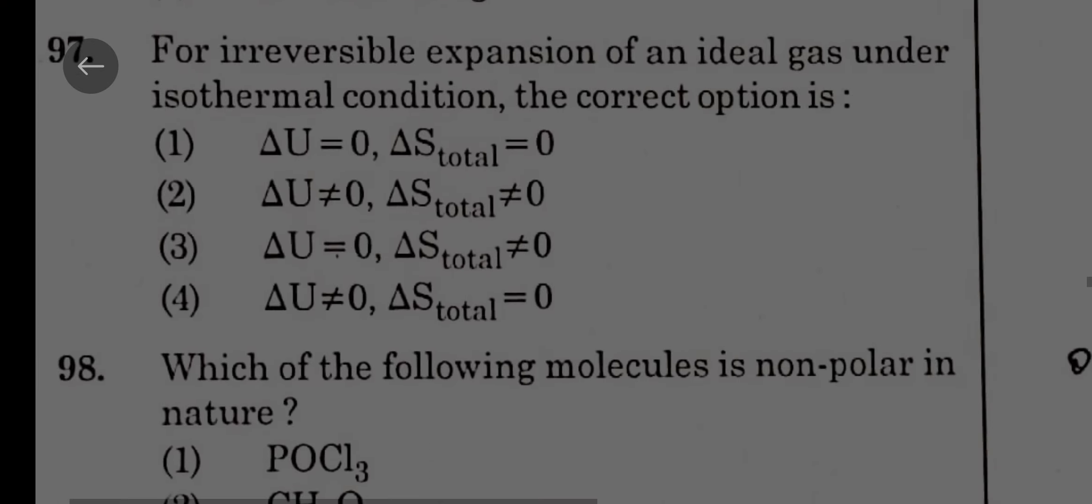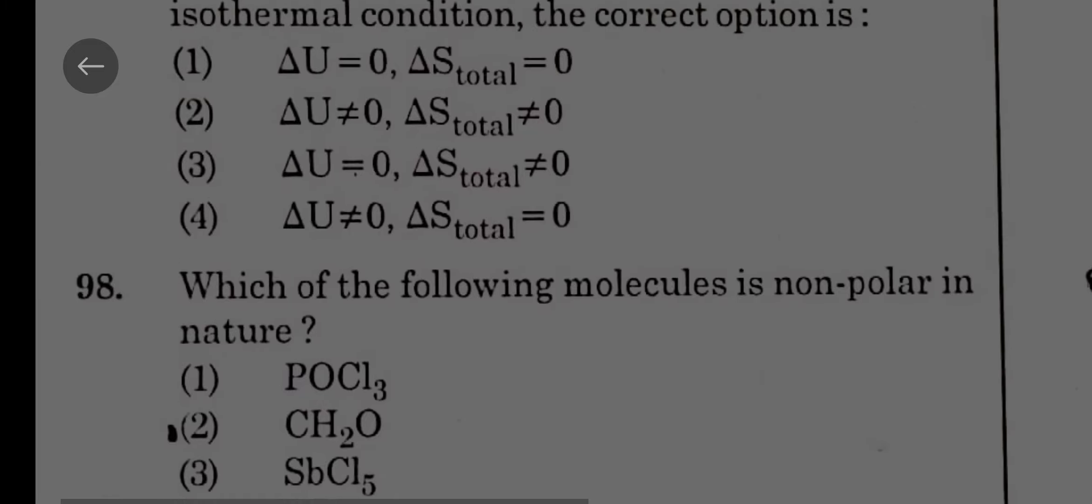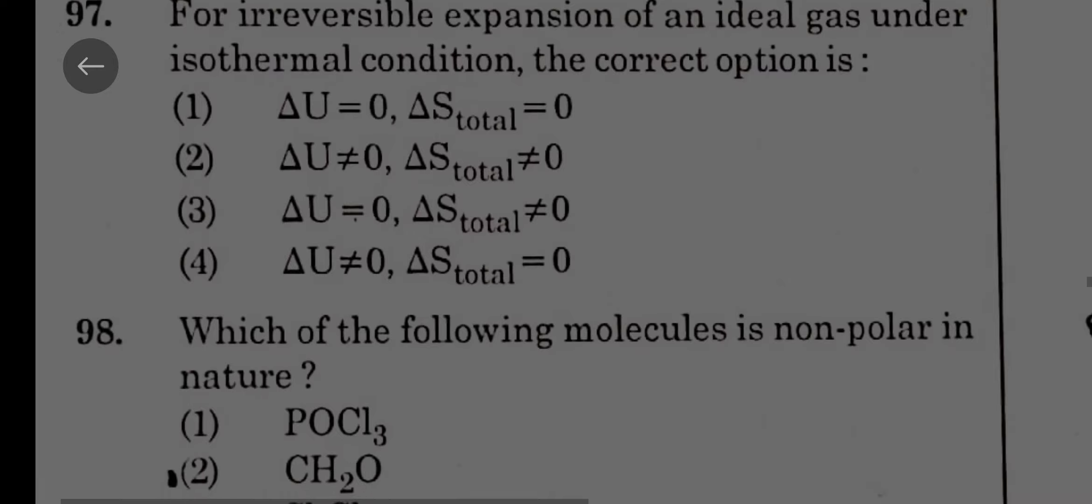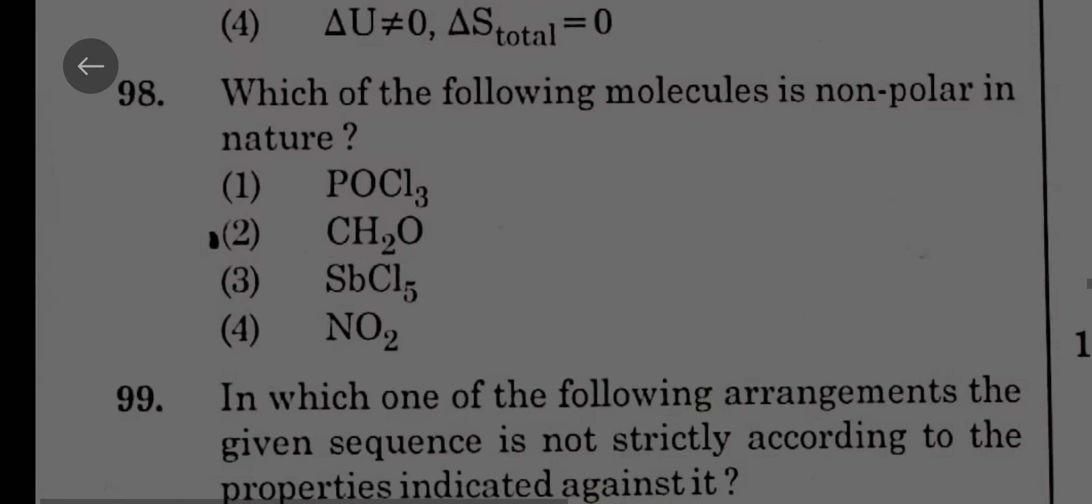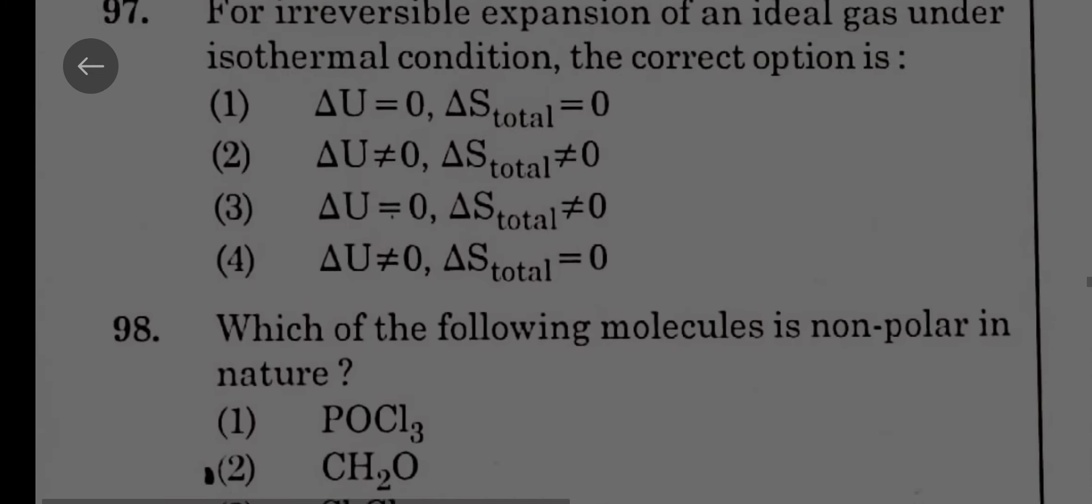For irreversible expansion of an ideal gas under isothermal conditions, the correct option is delta U equals 0, delta S total not equal to 0. But when this kind of questions are there in the exam, I think for NEET students these kind of questions may give you some confusion. You can comfortably leave this, but if you are okay with thermodynamics then you can answer this.